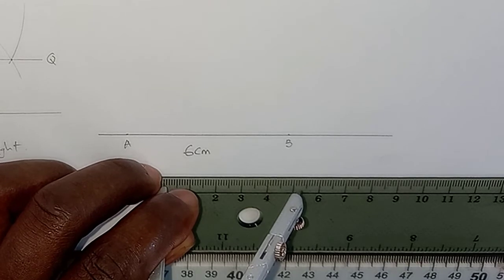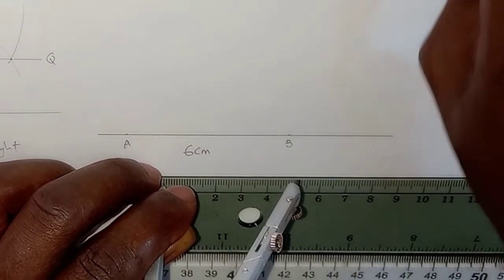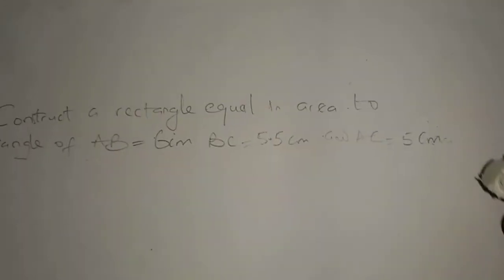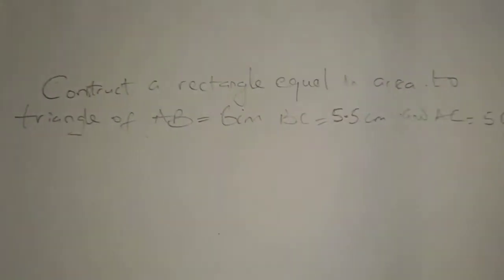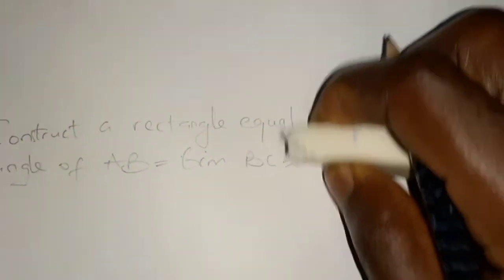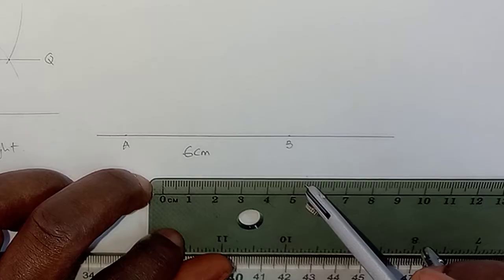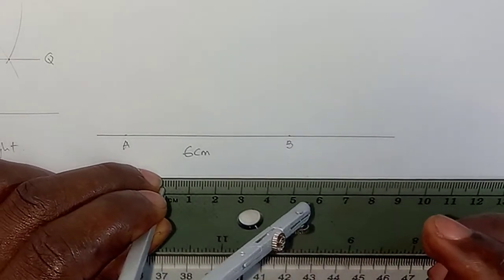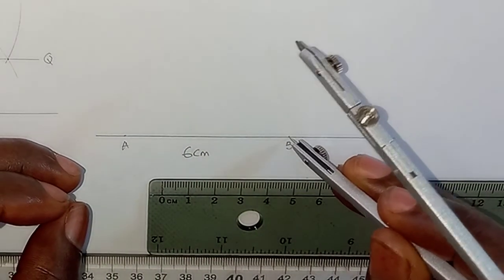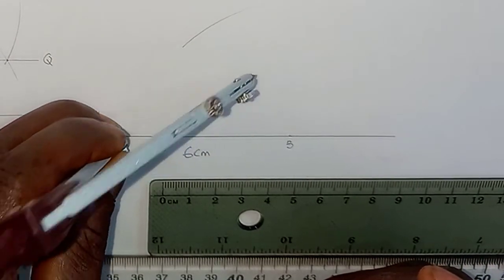The next thing is to draw the sides. Use your compass and open it to 5.5 centimeters. Note that I was initially saying 55 millimeters — I actually meant 5.5 centimeters. Open your compass to 5.5 centimeters: count to 5 on the ruler, then count the lines after it to get to 5.5.